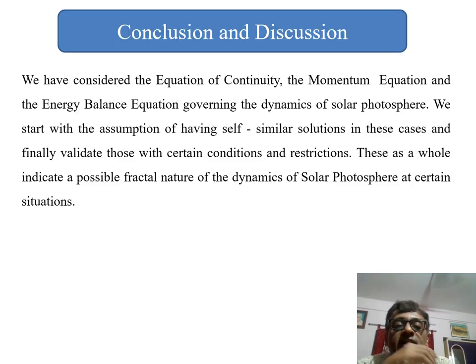So conclusion. We have considered the equation of continuity, the momentum equation and the energy balance equation governing the dynamics of solar photosphere. We have started with the assumption of having self-similar solution. Finally, we validate our answer with certain conditions coming in the final cases. So we believe that yes, there might be some form of self-similarity in the present context, but with certain restrictions. So it means that temporary cases might be there. Some special cases might be there. That means it is not expected that everywhere at every time we should have the self-similarity, but at certain point of time and certain point of the space, we can expect this self-similarity wherever these particular conditions are being satisfied with the present parameters.